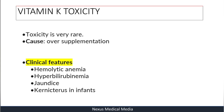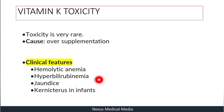Regarding toxicity: fat-soluble vitamins usually cause toxicity when supplied in excess, but for Vitamin K toxicity is very rare. It can occur with over-supplementation, and clinical features include hemolytic anemia, hyperbilirubinemia, jaundice, and kernicterus in infants.